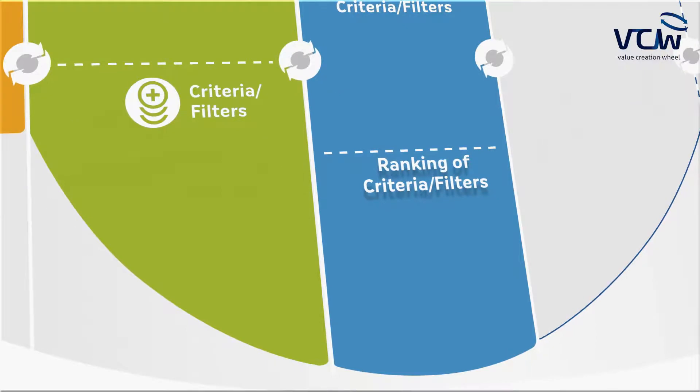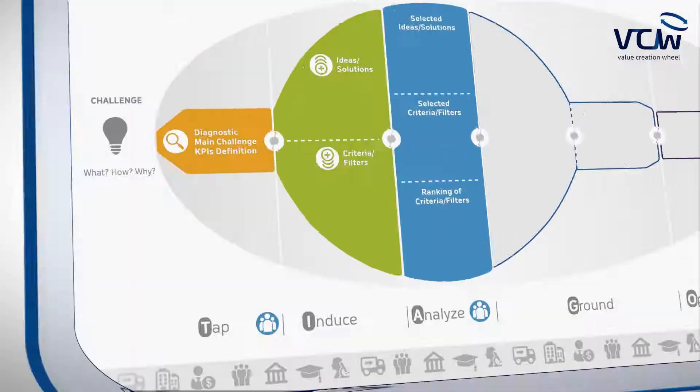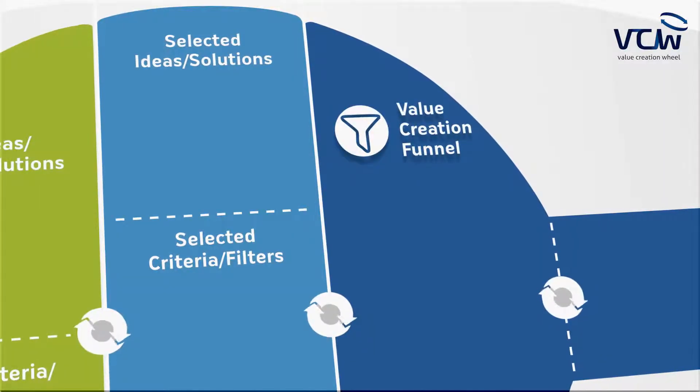For example, the most important filter needs to be aligned with legislation. Filter number two: we need to implement this within the next three months. Filter number three: it needs to be aligned with the capabilities of our team. Filter number four needs to be approved by the board of the multinational. Once we have all these filters, we can make a funnel.